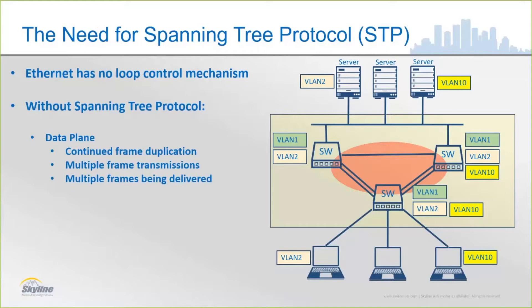In any kind of network element, we typically have three planes of operation. We have a data plane, which is actually forwarding our data frames throughout the network. We also have a control plane, which is done inside of the switch's intelligence. And then we have a management plane, which is where we engage with and actually manage the switch.